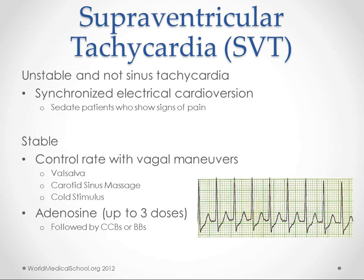Supraventricular tachycardia — technically this is any rhythm originating above the ventricle, but when we talk about SVT we're usually referring to paroxysmal SVT or PSVT, which generally involves a loop of electrical activity causing the tachycardia. If the patient is unstable, first make sure this isn't sinus tachycardia, then perform synchronized electrical cardioversion.